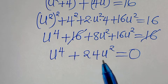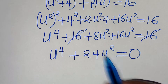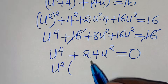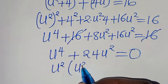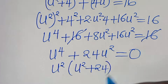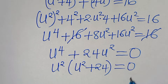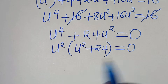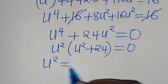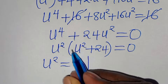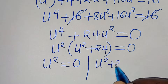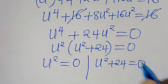Since u squared is common, we factor it out: u squared times, in parentheses, u squared plus 24, equals 0. So we have two parts: u squared equals 0, and u squared plus 24 equals 0.